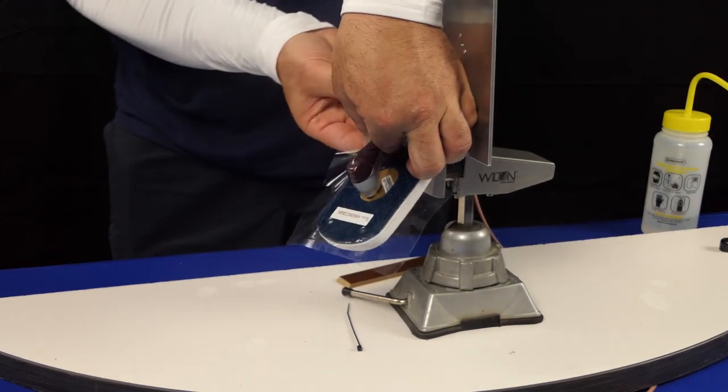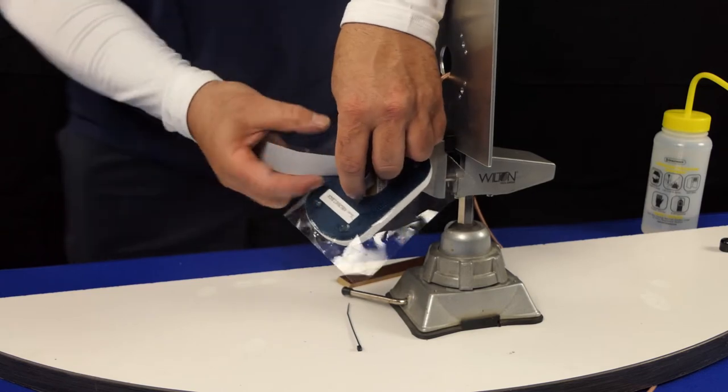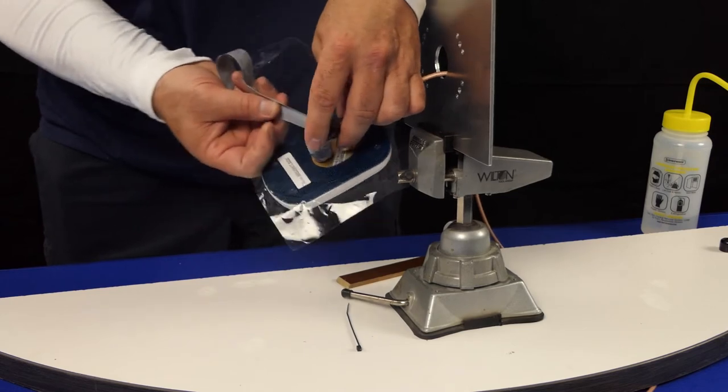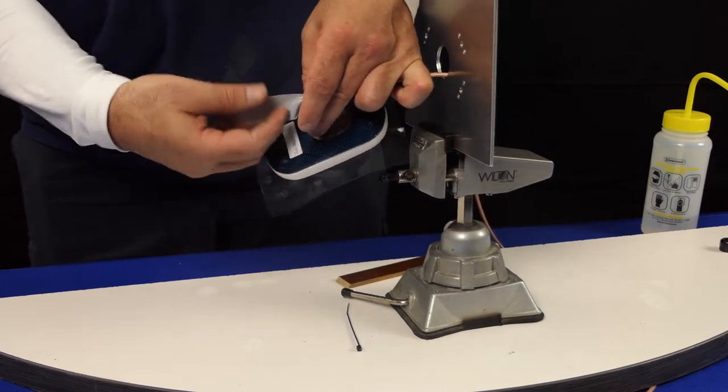After the first full wrap is complete, continue wrapping with the 50% overlap over the top of the stretch seal tape. Use the line in the middle of self-fusing silicone tape as a guide and remove the release film as required.